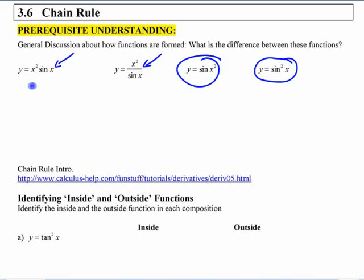This first one here is a product of two functions. This is the product of what? X squared and sine x. You can find the derivative of each of those things. You can use the product rule so you can find the derivative. This is the quotient of x squared and sine x.